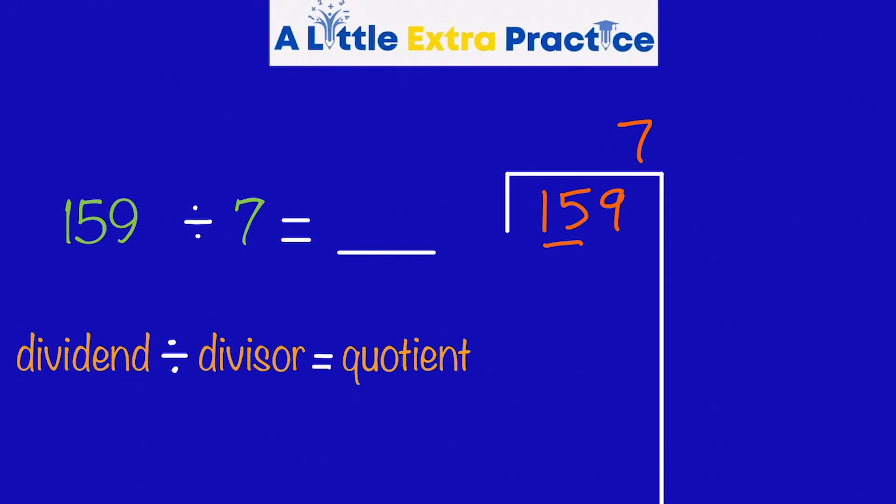As I look at this problem, my first thought is, what times 7 is almost 15? Well, 7 times 2 is 14, but this isn't 7 times 2 is 14. This is actually 150 that I'm looking at. I'm just ignoring the 9 right now. So, 7 times 20 is 140. I'm going to subtract. I get a 9. I get a 1.